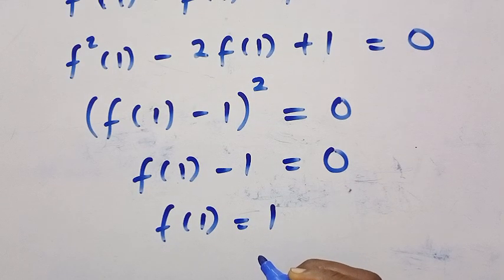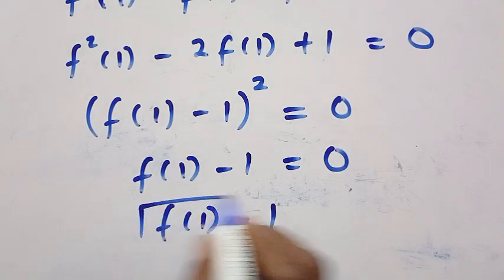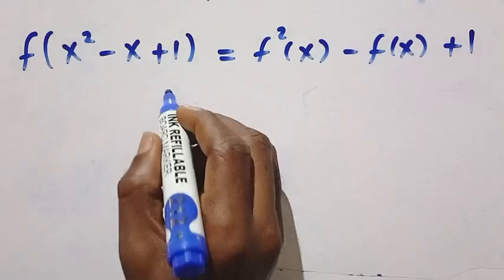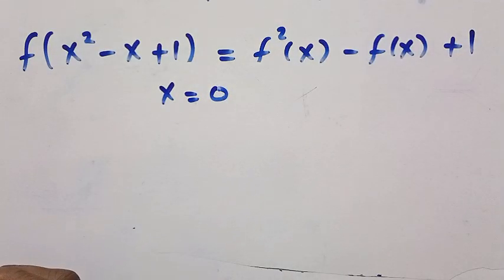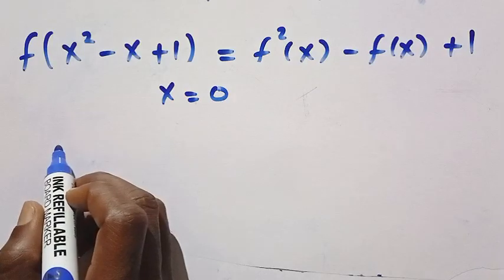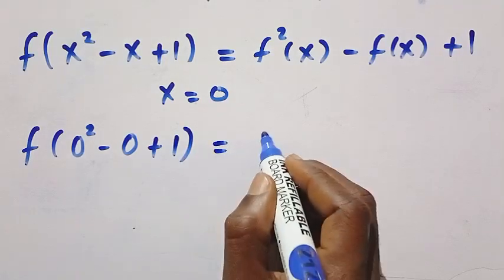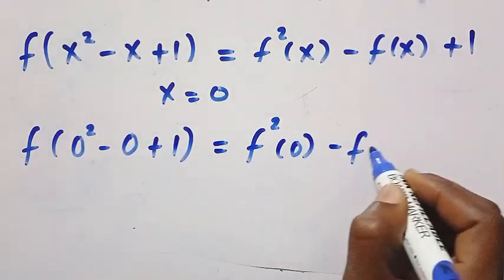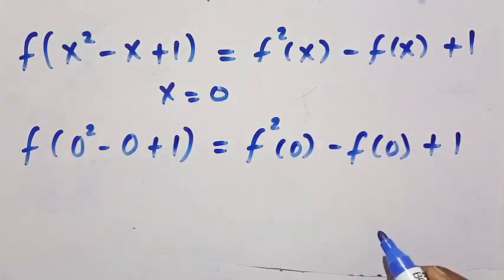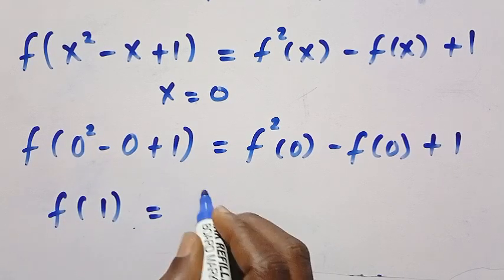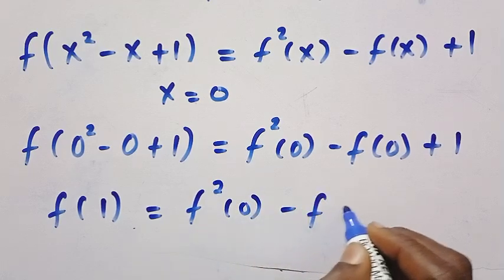Also, we have to find f of 0. So we let x equals 0 and do the proper verification. Changing every x to 0: f of 0 squared minus 0 plus 1 equals f squared of 0 minus f of 0 plus 1. This simplifies to f of 1 equals f squared of 0 minus f of 0 plus 1.